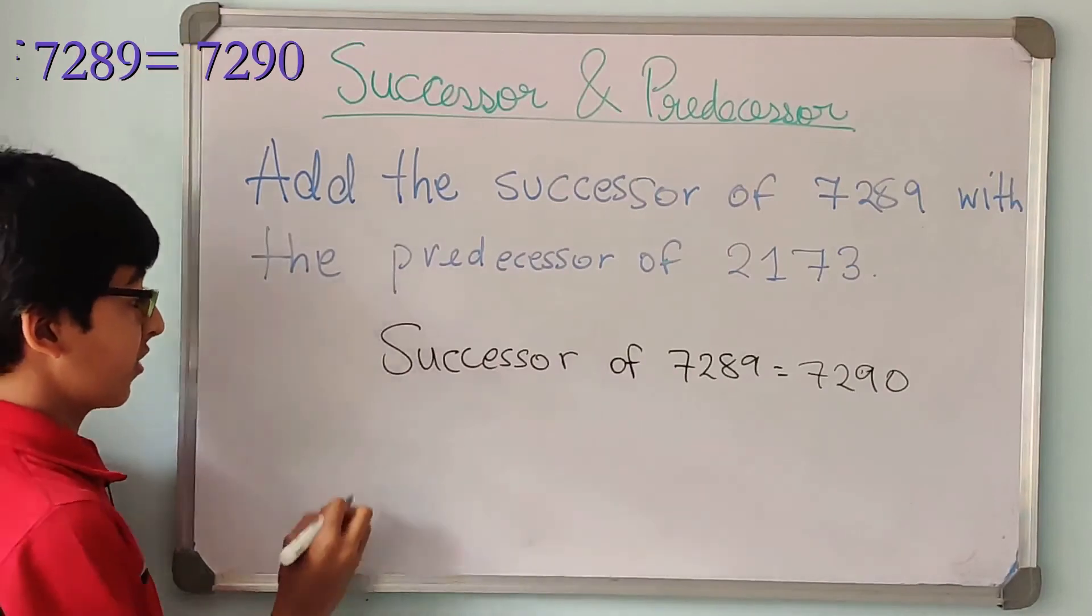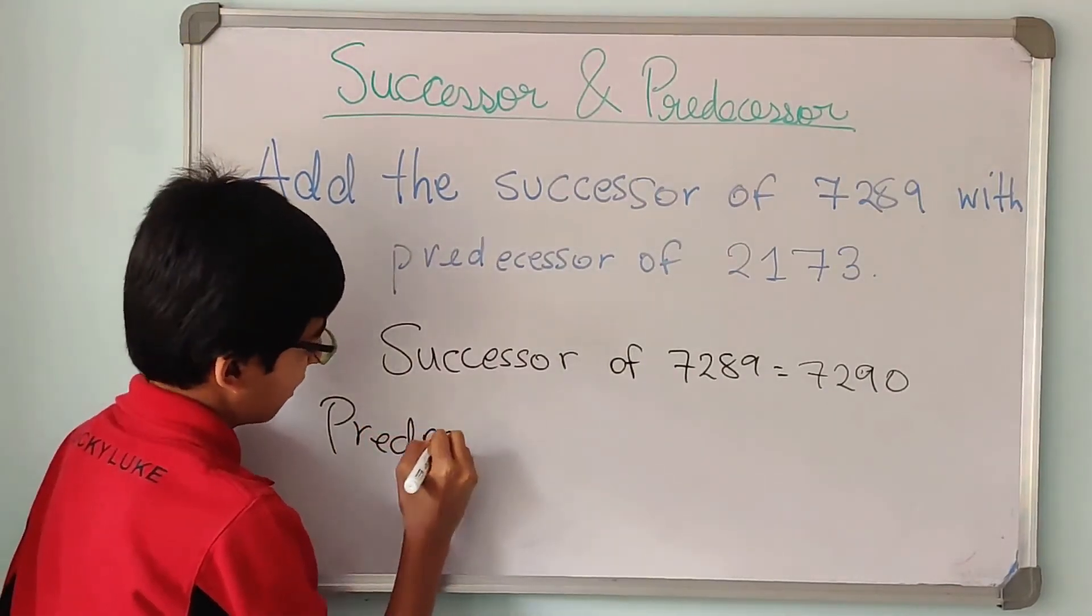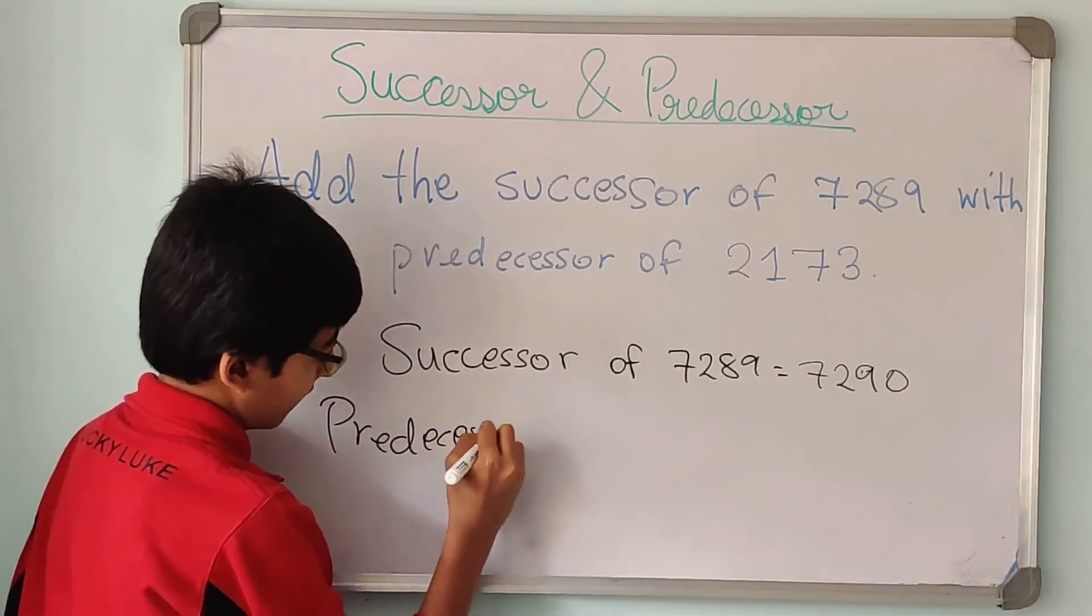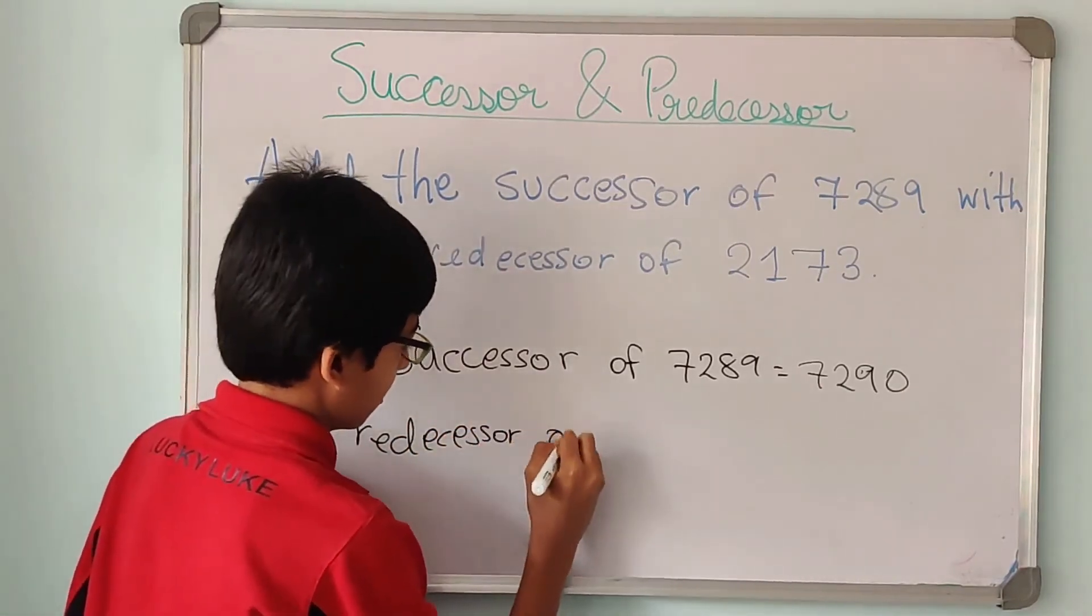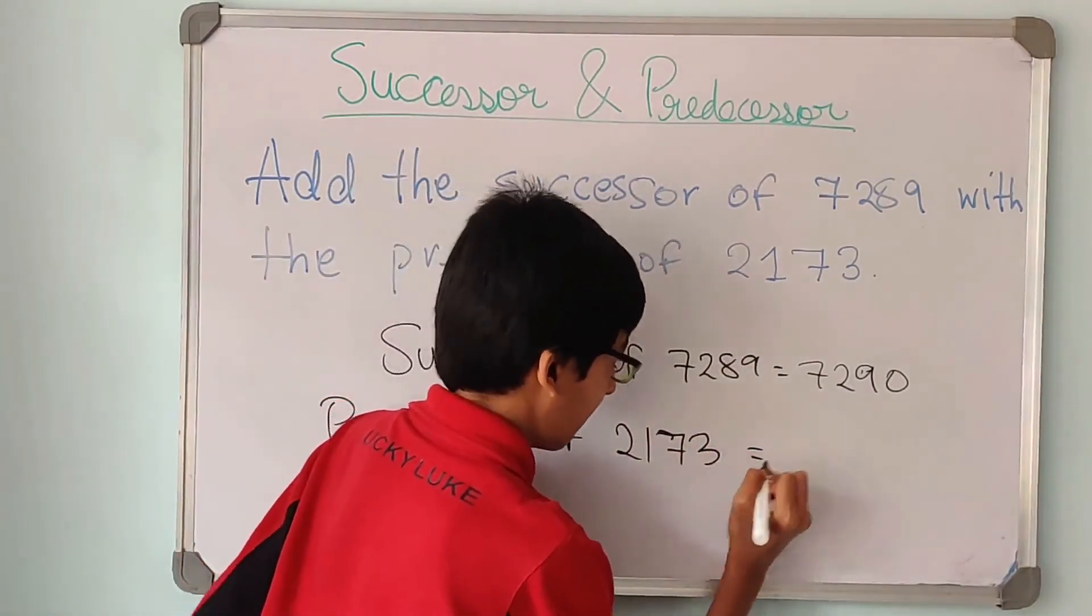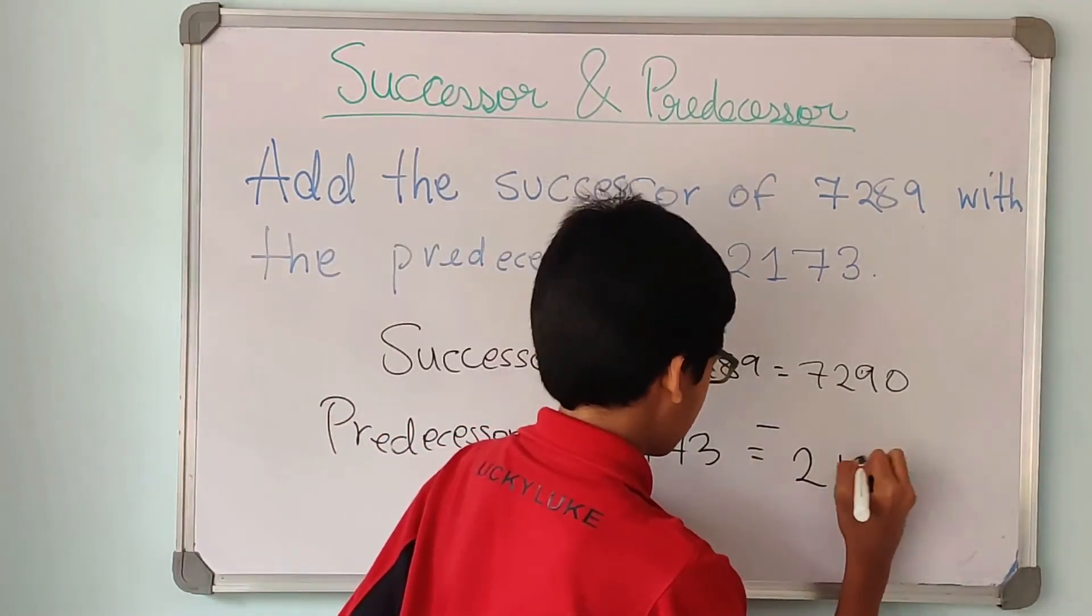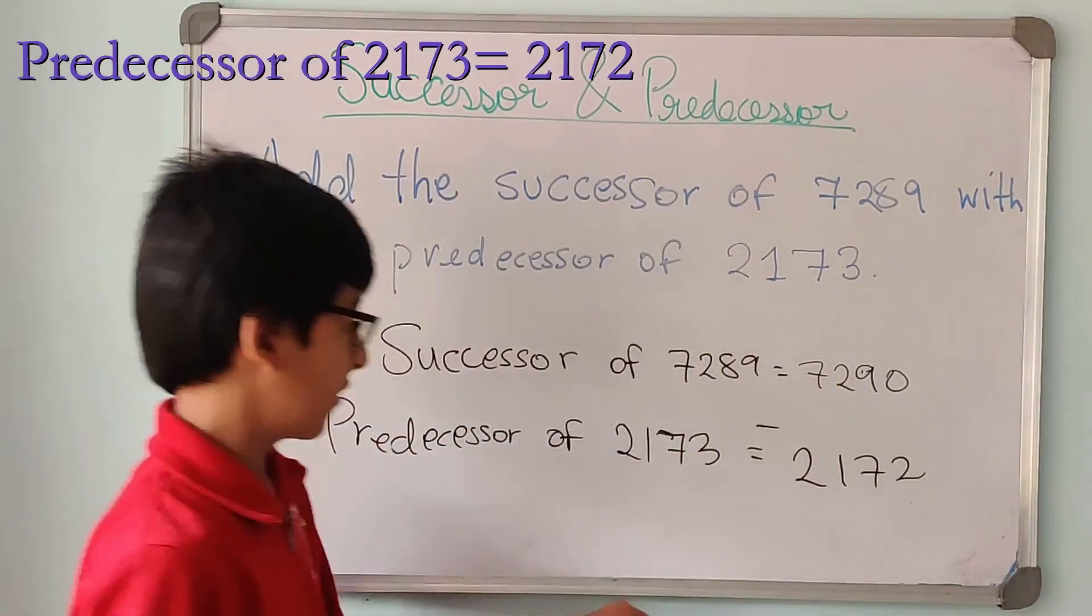So this is the successor of 7289. Now let us find the predecessor of 2173. So the predecessor of 2173 is 2172.